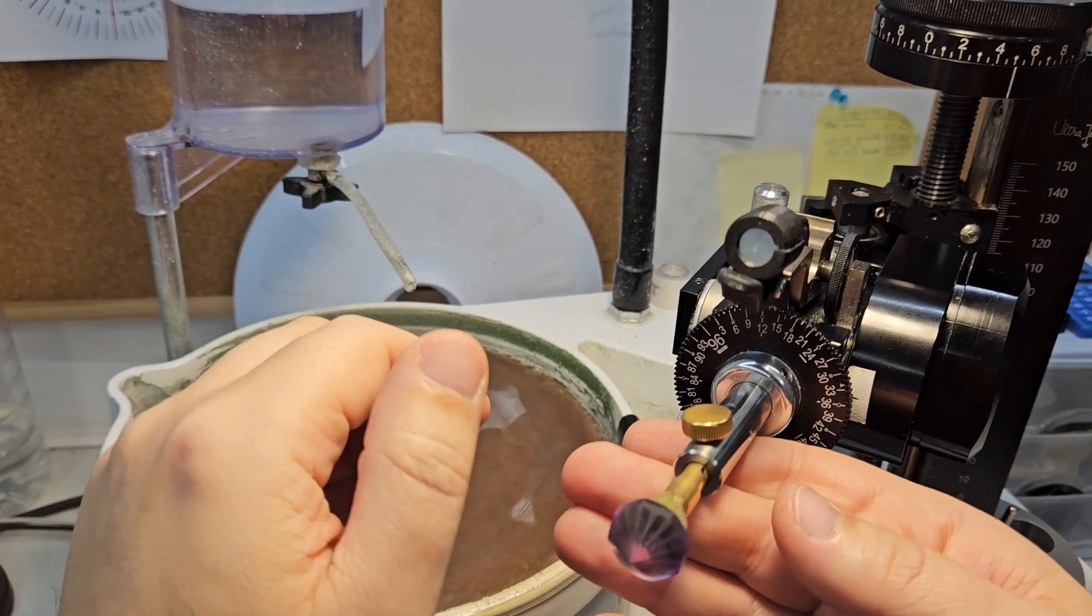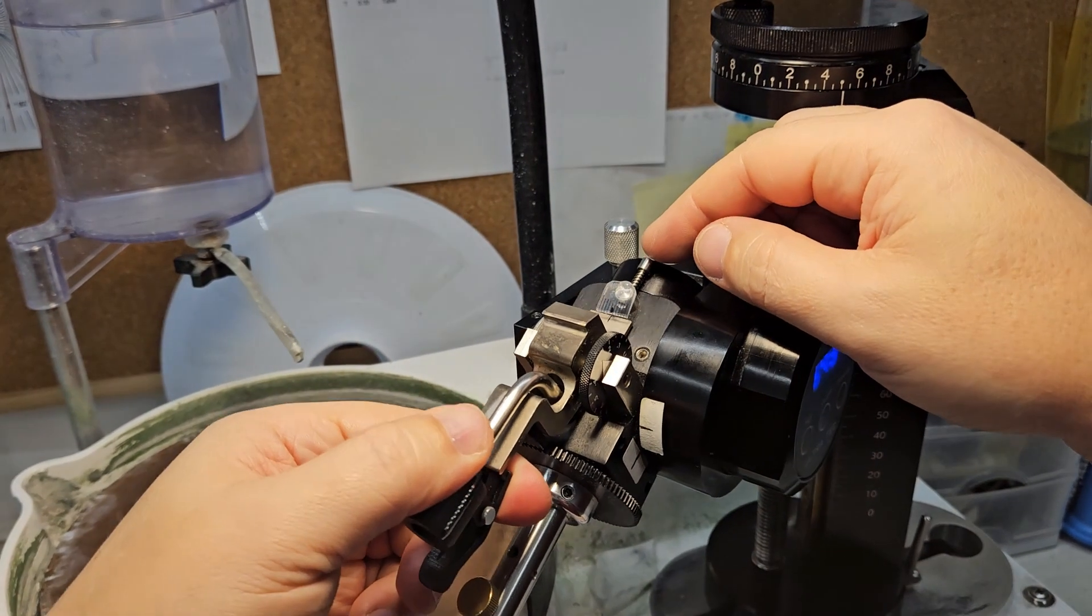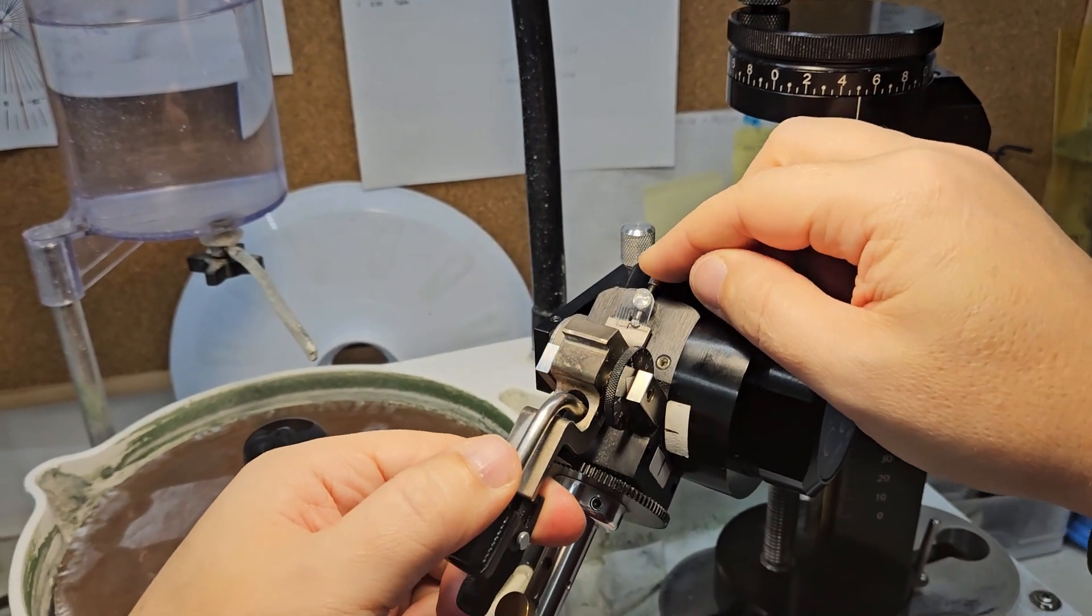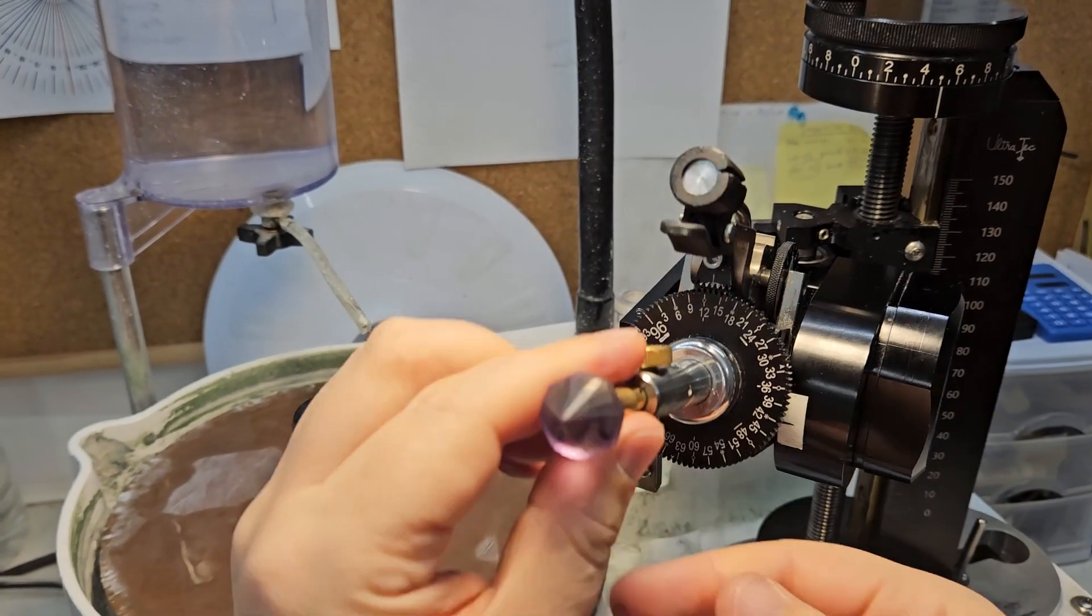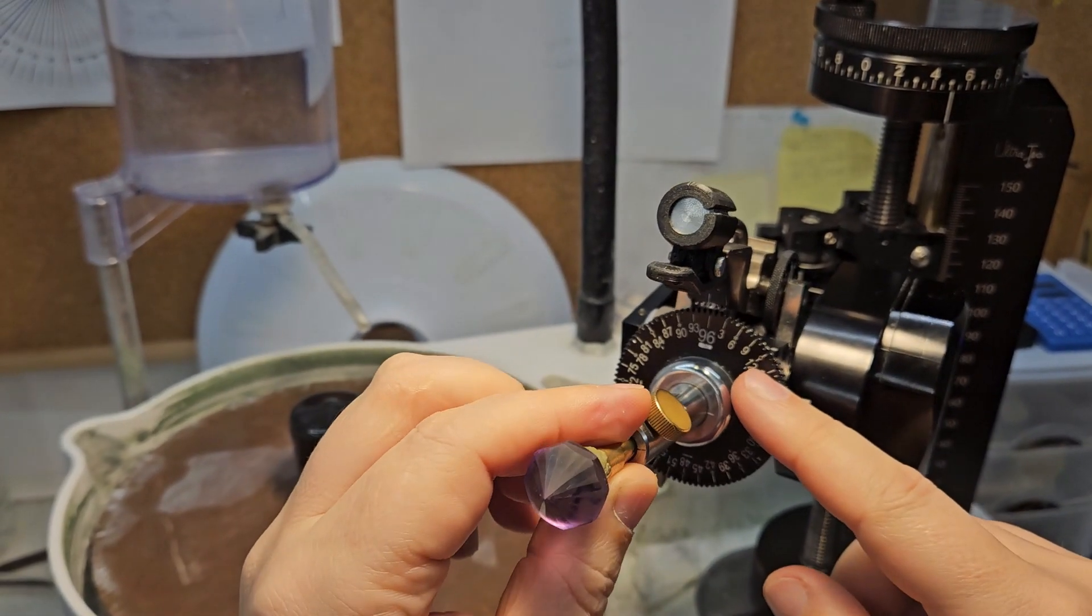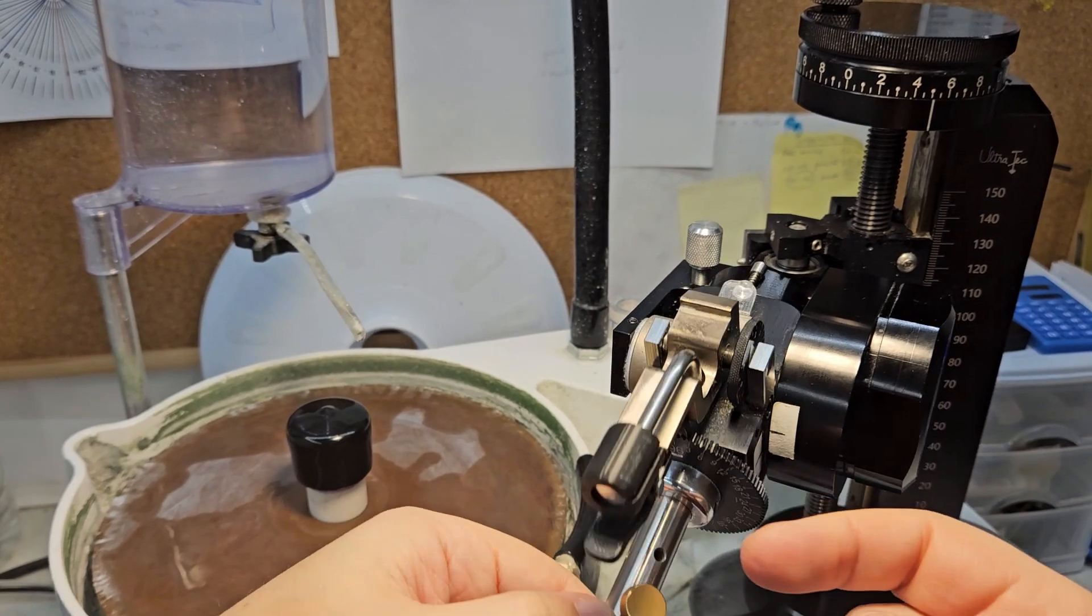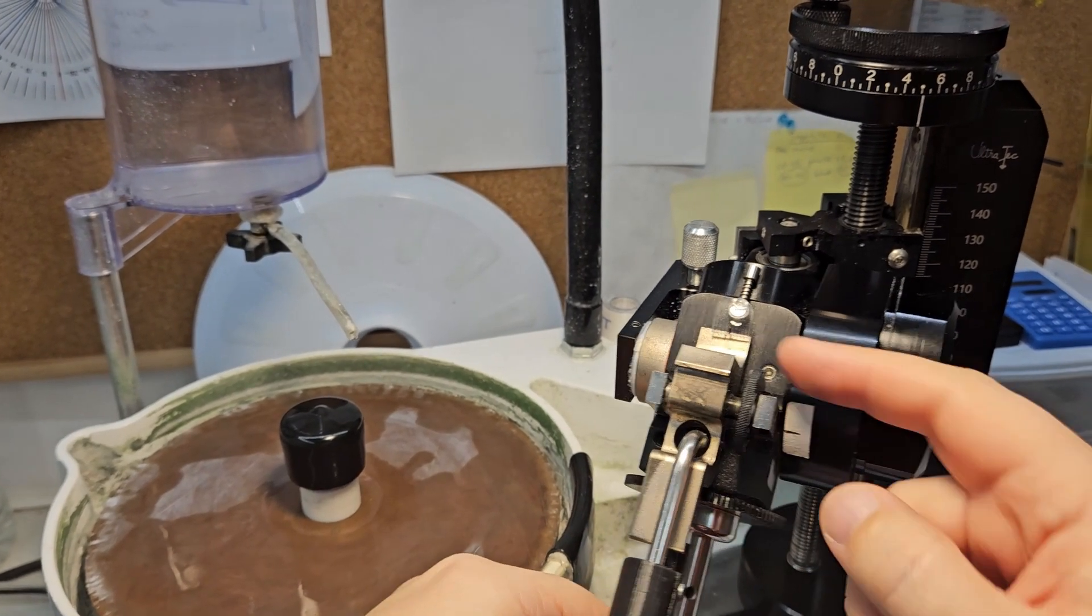One important thing to keep in mind. When changing the index wheel, after removing it, make sure the rocker doesn't drop and break the ruler on the other side. To prevent this, always lock the rocker in its raised position, as if you were rounding the stone. Once secured, you can change the index wheel as usual, without any issues.